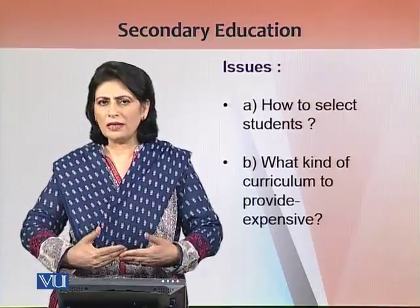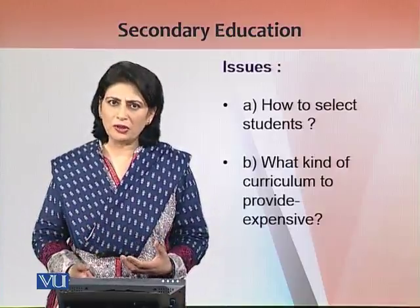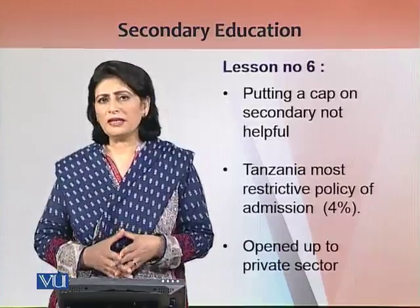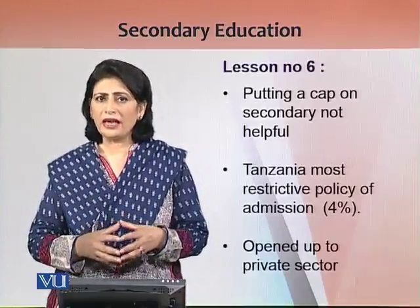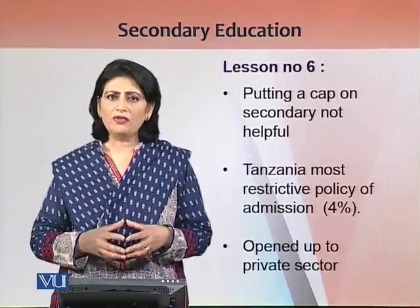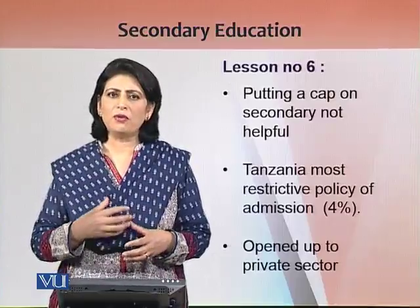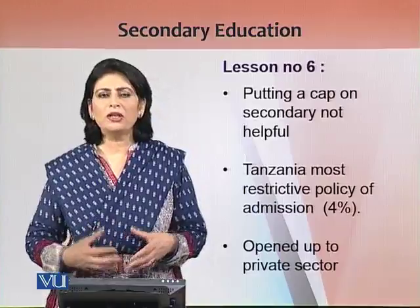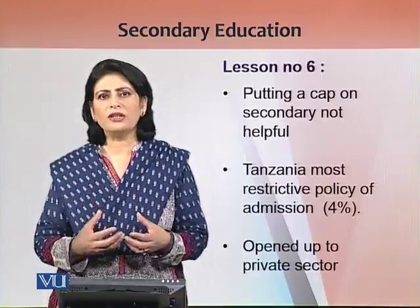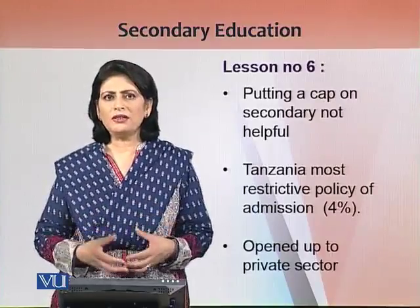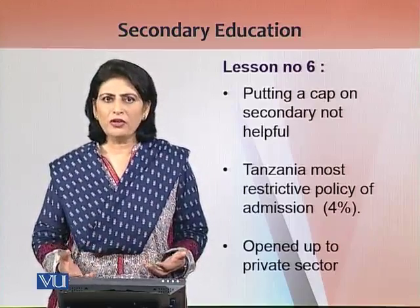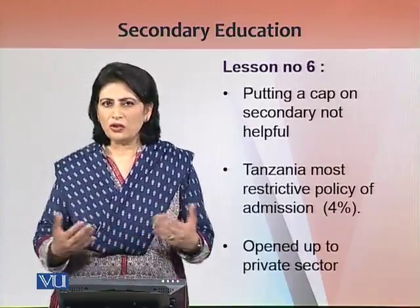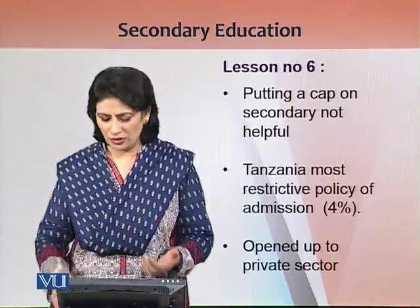So what is the lesson we have learned? The lesson is that putting a cap on secondary education does not help. We have the example of Tanzania before us, which has the most restrictive policy of admission into secondary school, allowing only 4% of its population to be enrolled in secondary school in the public sector. The result was only a surge of private sector secondary schools — all those refused admission simply moved on to getting that education in the private sector. So it did not restrict the number of students reaching secondary education.